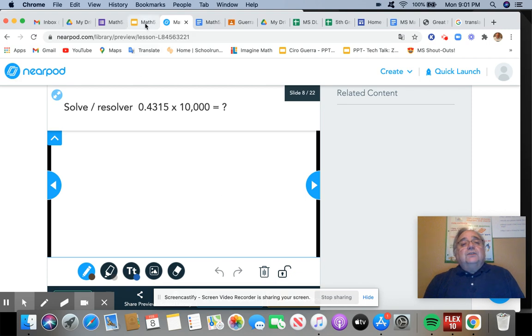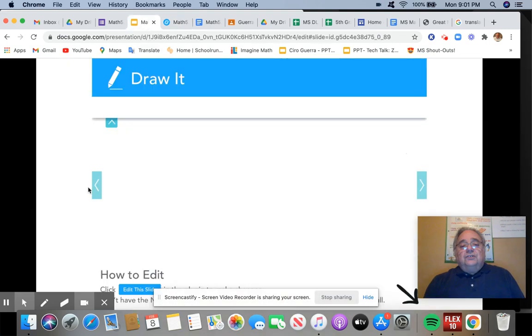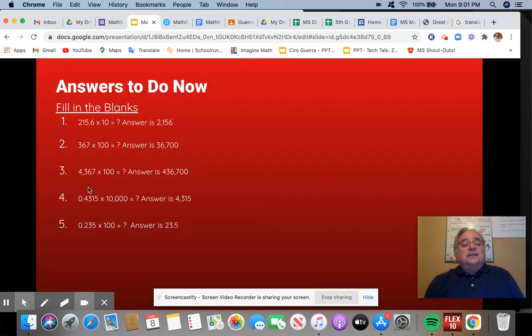So let's go back to our slides so that we can see the answers to the rest of those questions. As you can see, the first one was 2,156. The second was 36,700. The third one is 436,700. The one we just did is 4,315. And then the last one we multiply by 100 makes it 23 and 5 tenths. I'm going to wait five more seconds so that you can look at that and make sure that you got the same answers. Excellent. Way to go. Let's go on.